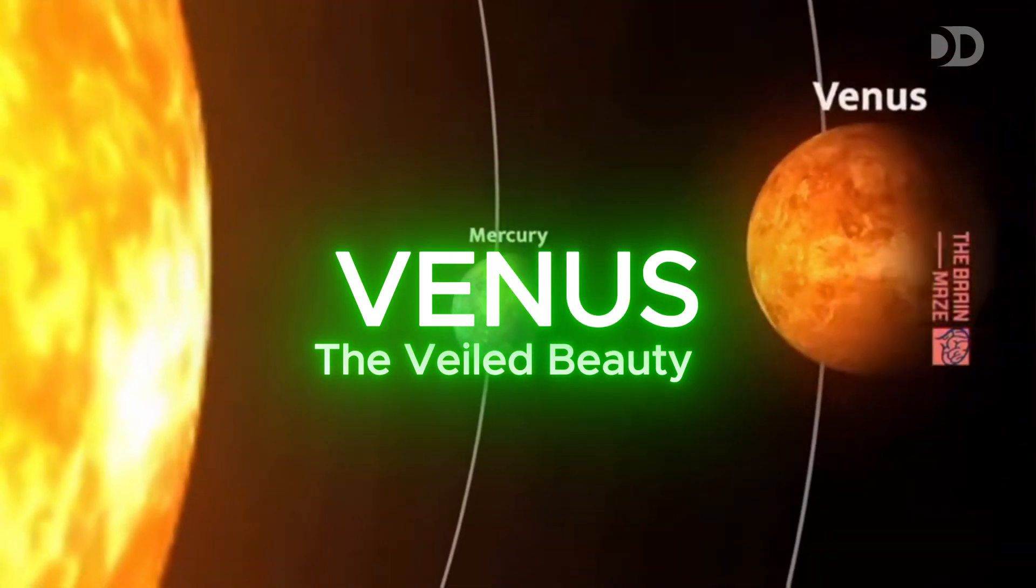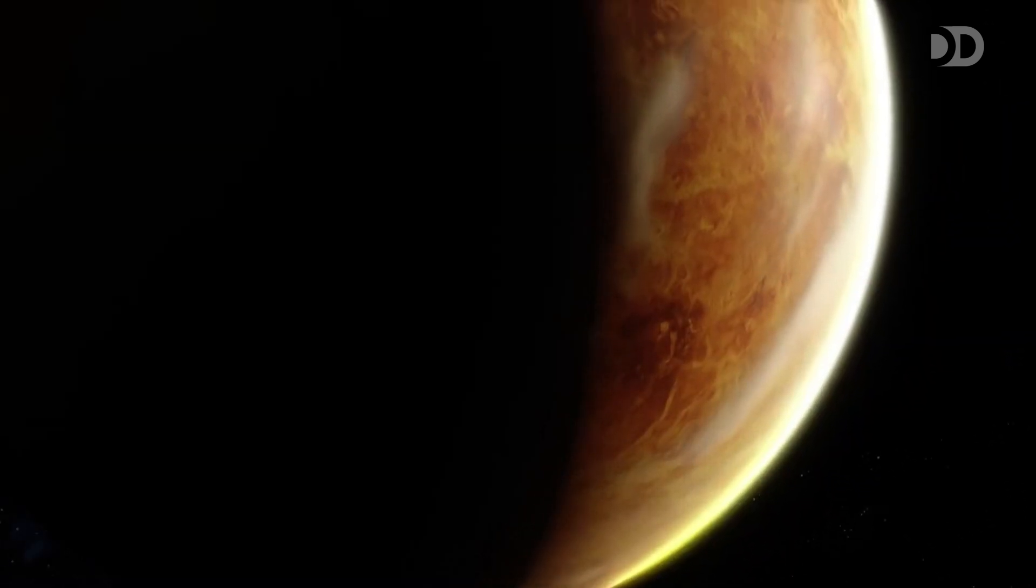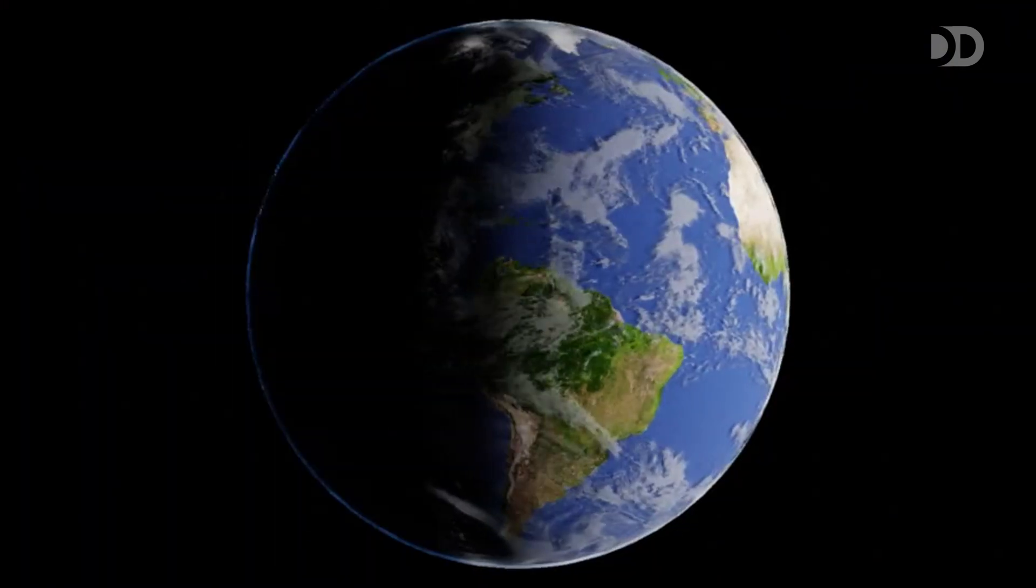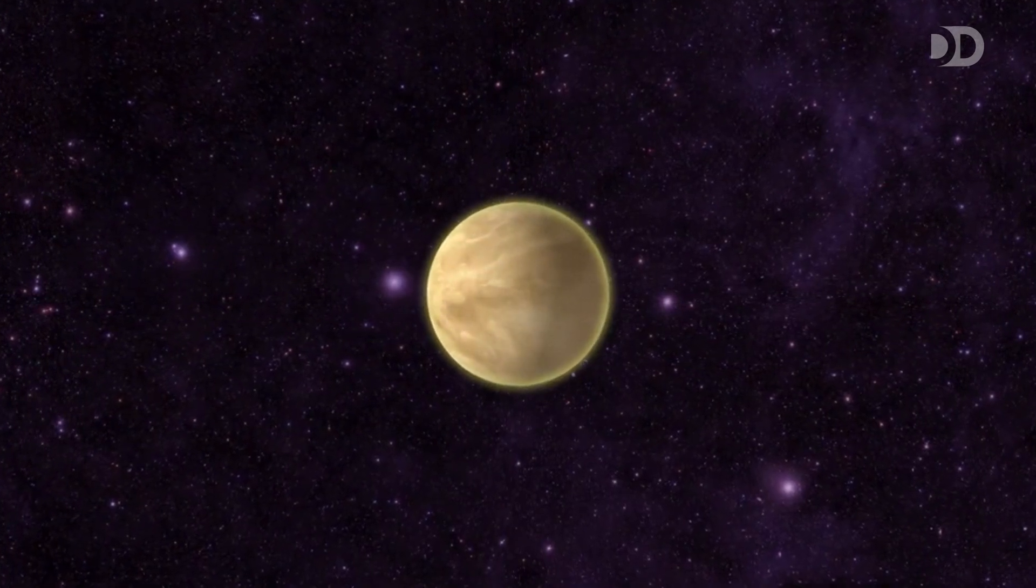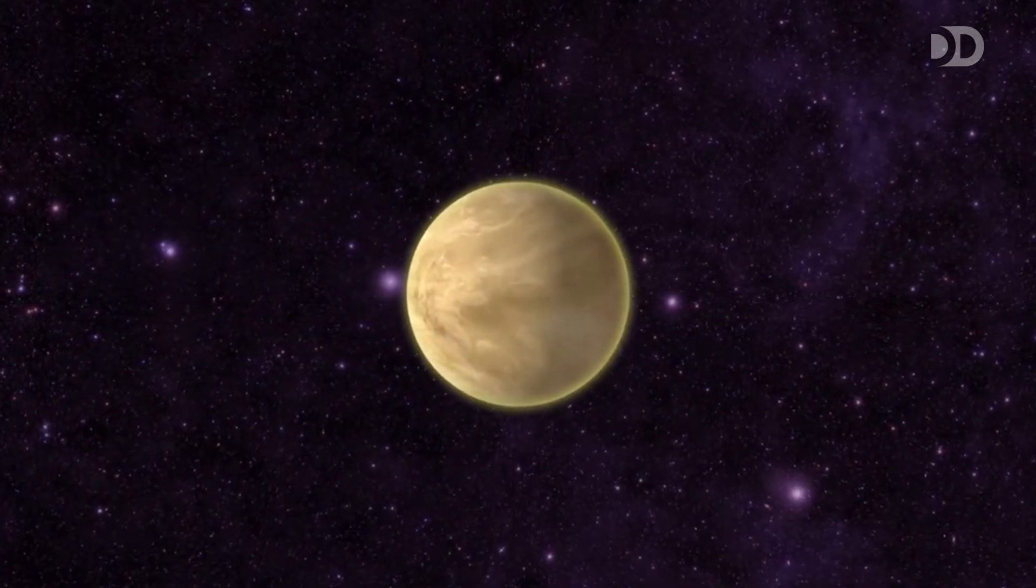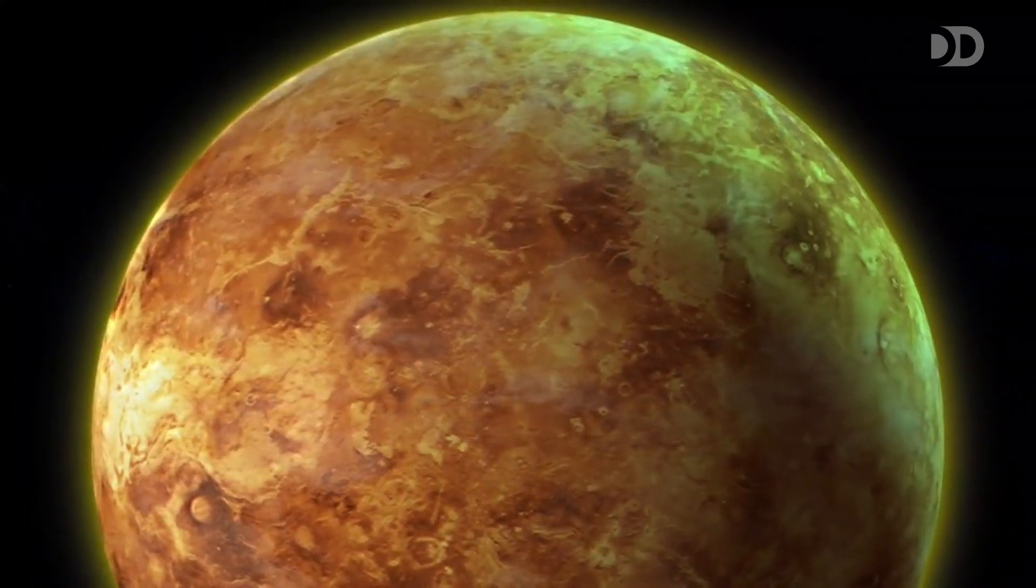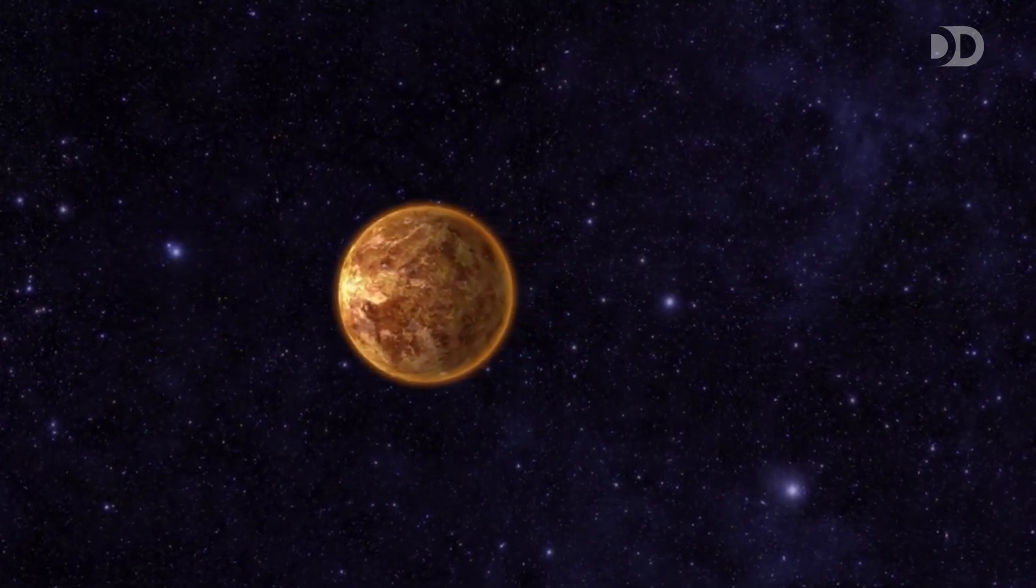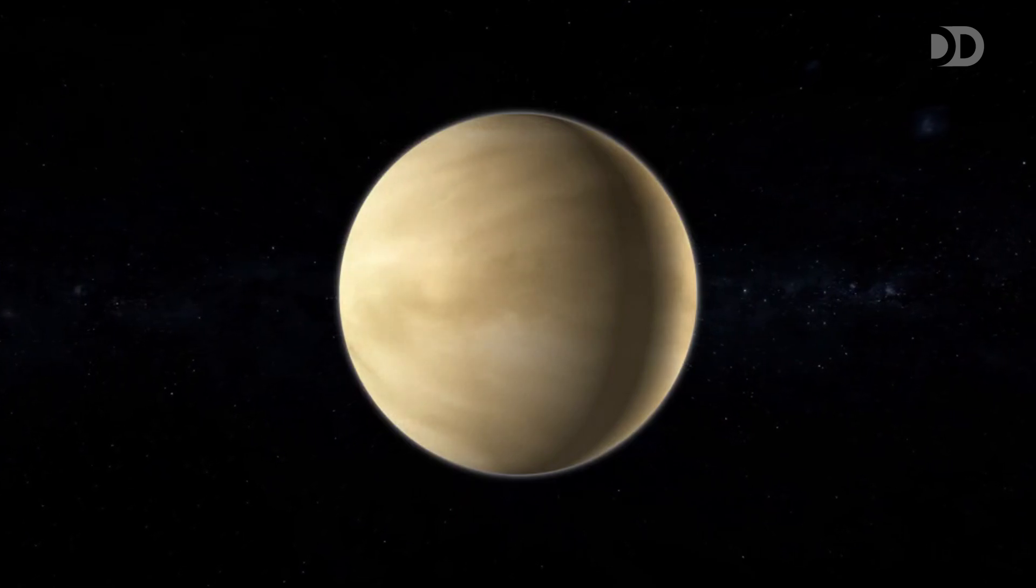Next up is Venus, Earth's closest planetary neighbor, and a planet that has fascinated astronomers and dreamers for centuries. Often called Earth's sister planet because of its similar size and mass, Venus is a world that both mirrors and contrasts our own in dramatic ways. From afar, its golden glow is unmistakable in our night sky, shining as the third brightest object after the Sun and Moon. But beneath its beautiful, cloud-covered exterior lies a world wrapped in mystery.